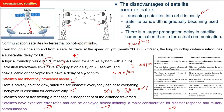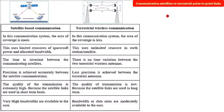Now comparing satellite-based communication with terrestrial wireless communication: on the ground you can have point-to-point communication, while in satellite communication it is all about sending the signal up to the satellite, which amplifies it, does some digital signal processing, and sends it back via downlink to the ground station.